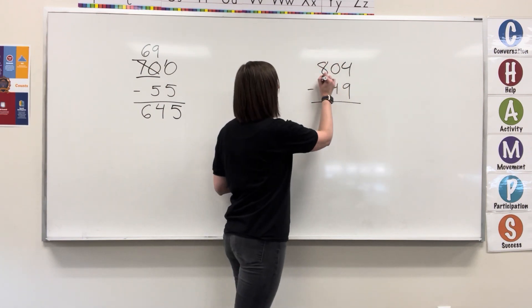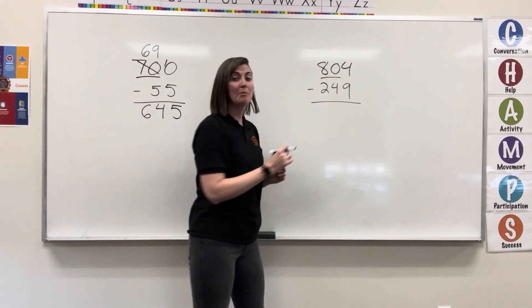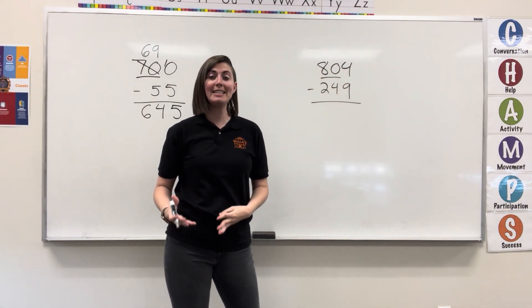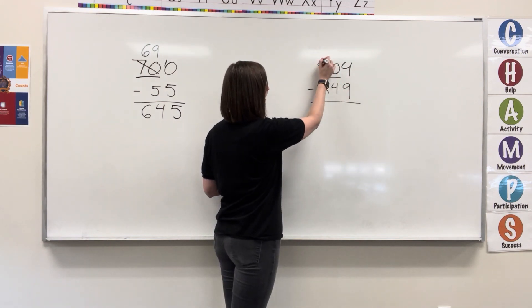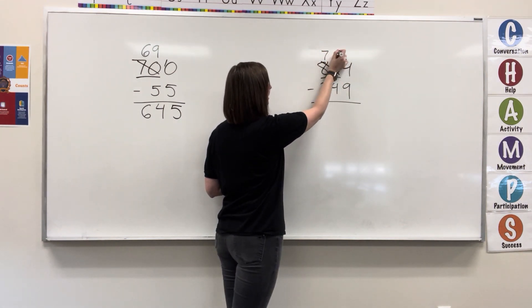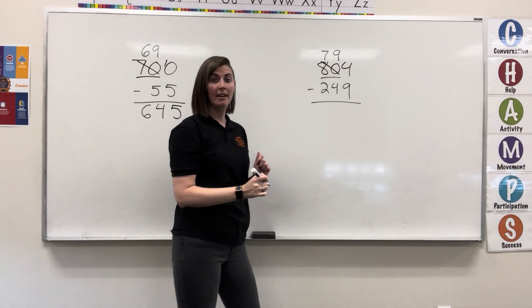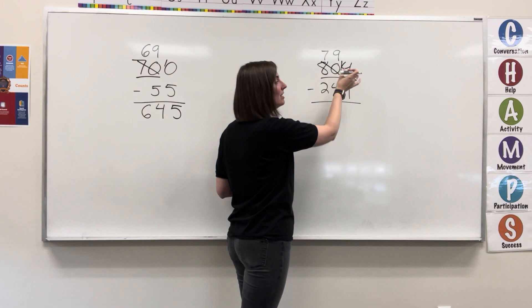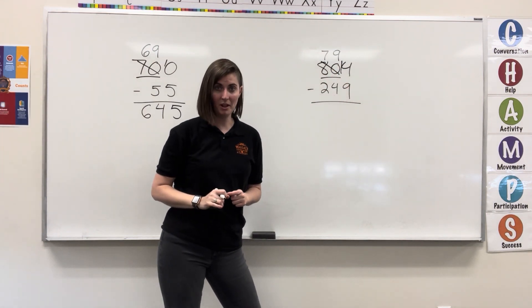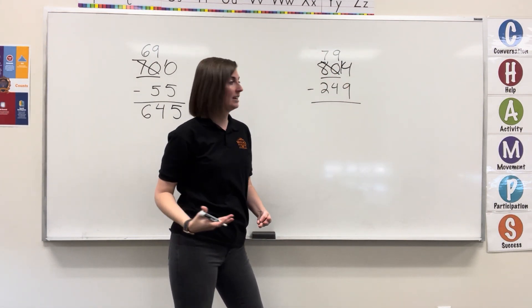I'm going to say that 80 is my group that I'm going to borrow from to give a 10 to the ones column. So, if I'm borrowing from 80, I cross it out and it becomes 79. I've borrowed a 10 into the ones. Instead of 4 ones, I now have 14 ones. I can start subtracting.